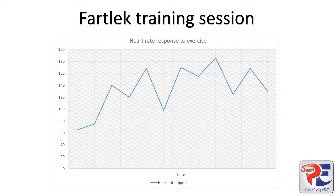So let me break down the graph for you very quickly. On the y-axis — the one that goes from top to bottom on the left — that is the heart rate, measured in beats per minute. On the x-axis, which goes from left to right along the bottom, that is time.